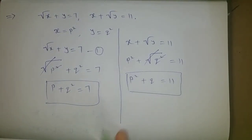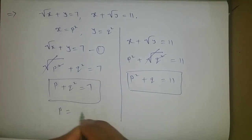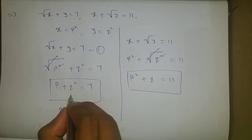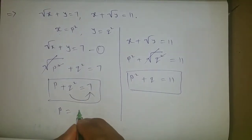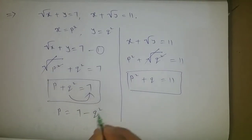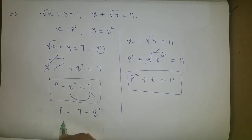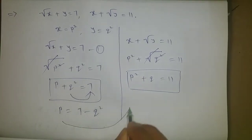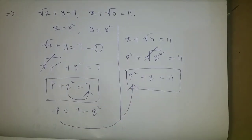From the first simplified equation, p = 7 - q² (taking q² to the right side). Now I will substitute this value of p into the second equation.